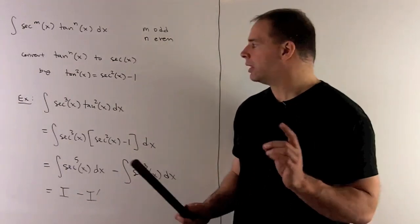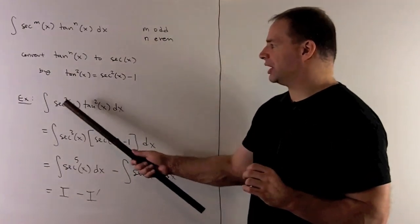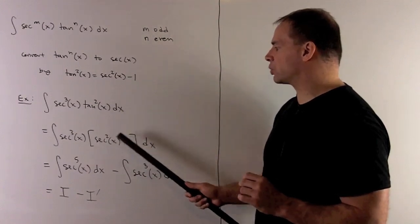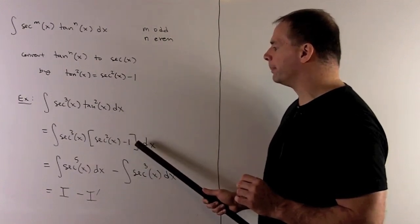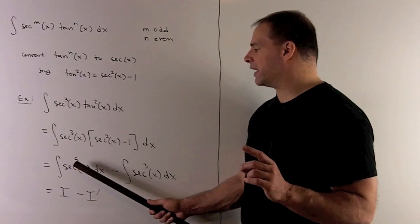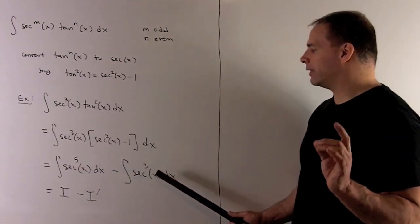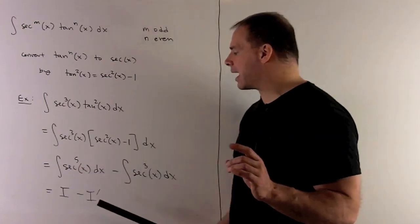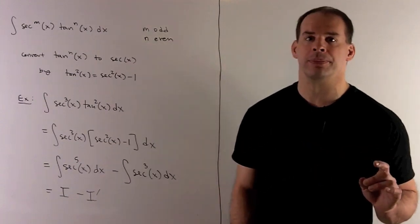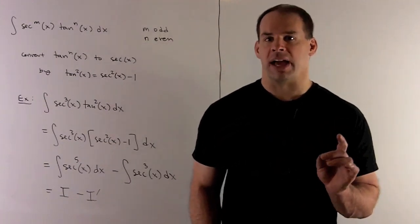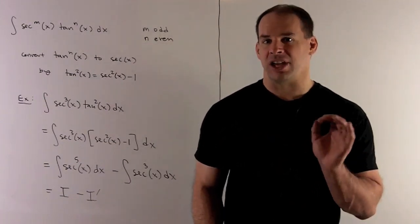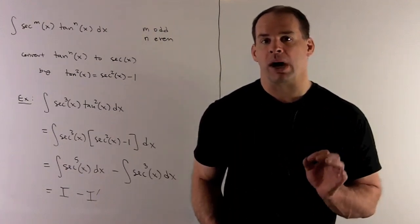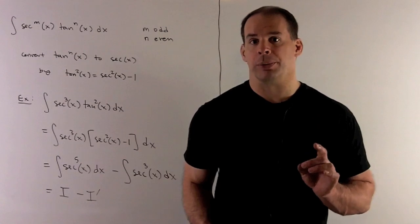As an example, take the integral of secant cubed tan squared. Write tan squared as secant squared minus one to get secant to the fifth minus secant cubed — we saw how to do each of these, so this is just our capital I minus I prime. In general, if you had tangent to the fourth, that becomes secant squared minus one quantity squared, and then you'd have more terms to work through.